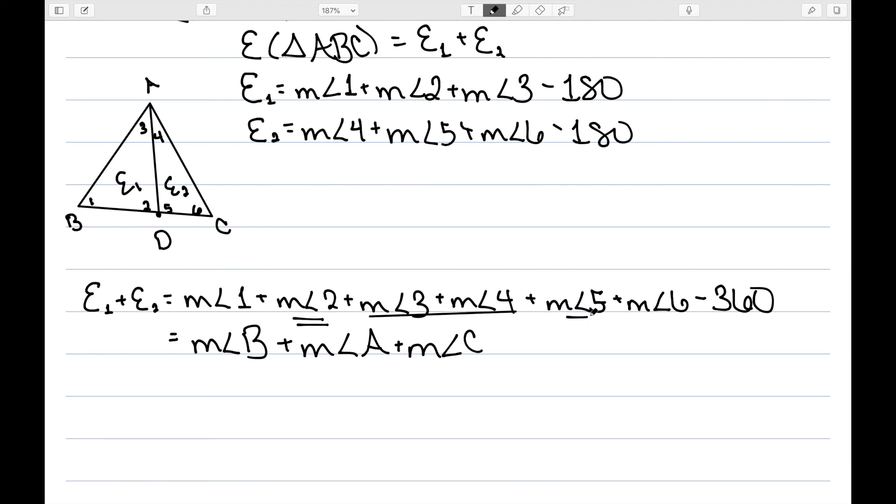And then 2 plus 5 is 180. Since those are supplementary, they lie on a line. And then minus 360. Rewriting this, we have the measure of angle A plus the measure of angle B plus the measure of angle C minus 180, which is exactly the excess of triangle ABC.